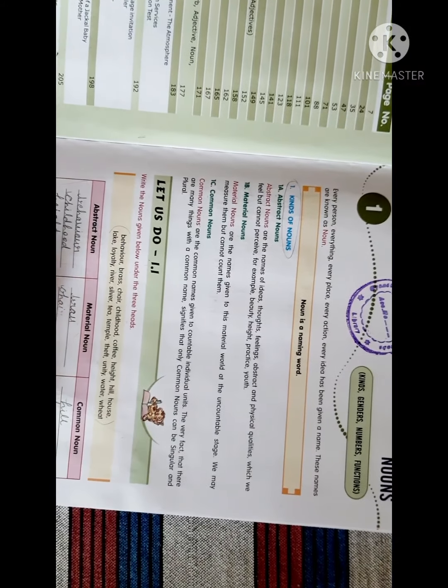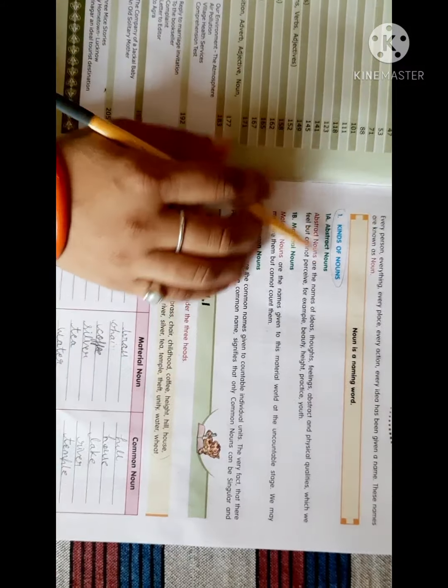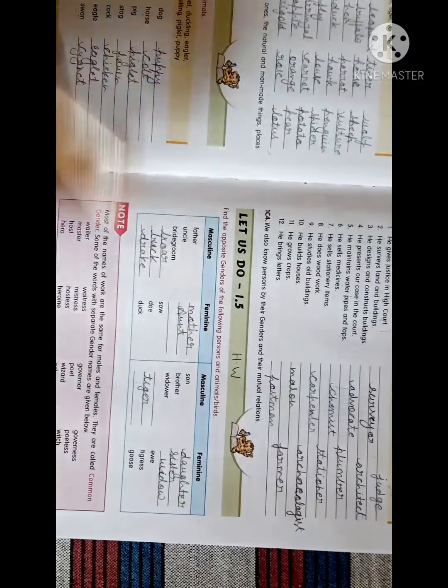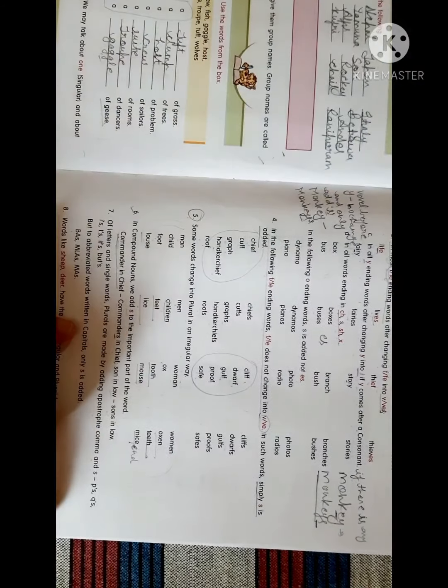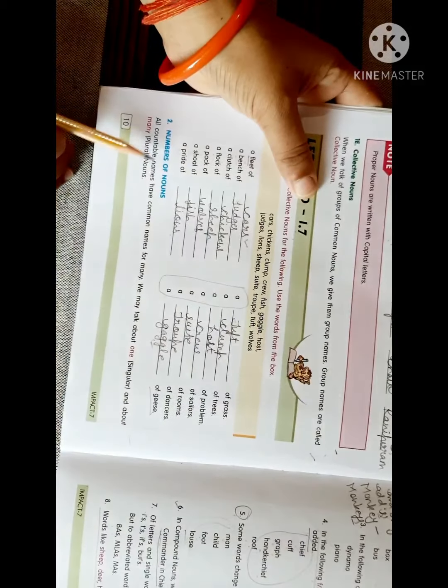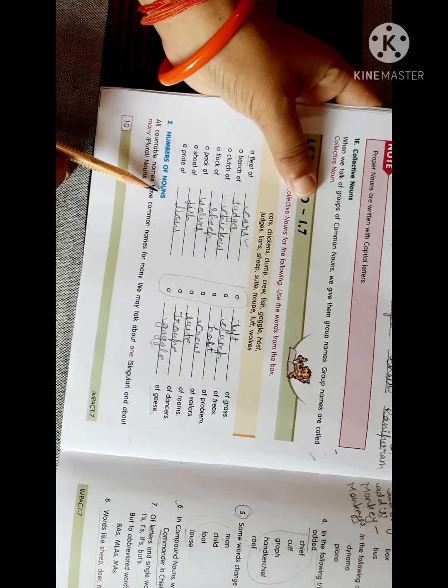Just see what have been completed. Nouns definition, that is clear. Kinds of nouns, yes it is also clear. Numbers of nouns, we have read in last class.